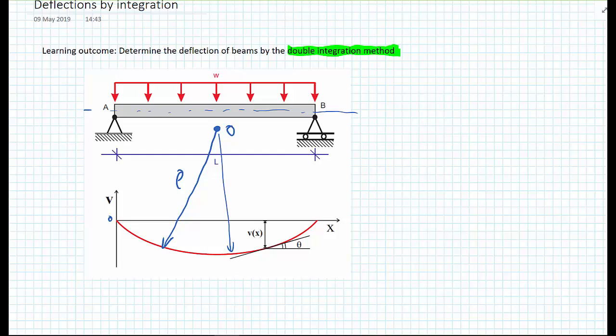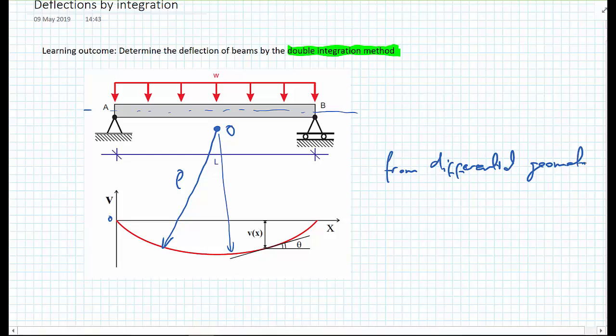And I'm just going to state this now from differential geometry. So from differential geometry, we get that 1/rho is equal to d²V/dx² all divided by 1 plus (dV/dx)² and all to the power of 3/2.